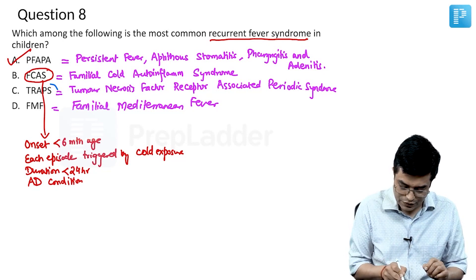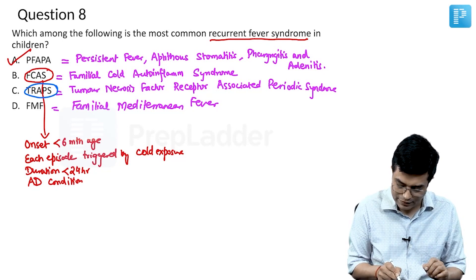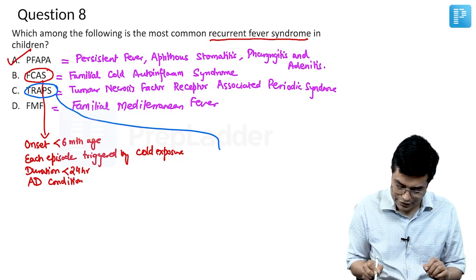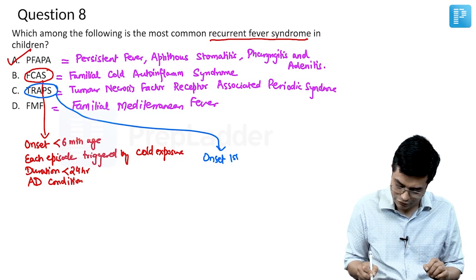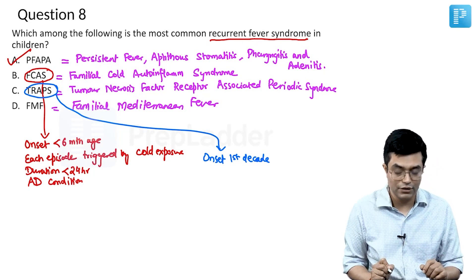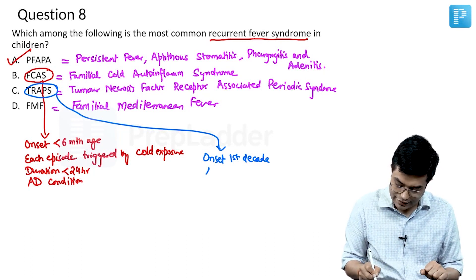Talking about TRAPS — Tumor Necrosis Factor Receptor Associated Periodic Syndrome — the onset occurs in the first decade of life, so before 10 years of age. It is also considered to be an autosomal dominant condition.